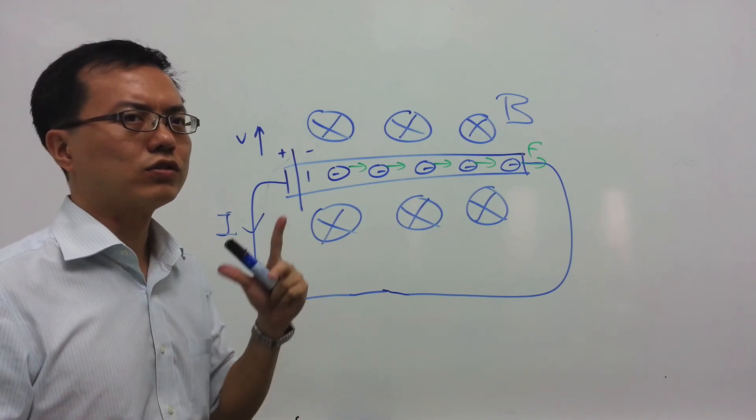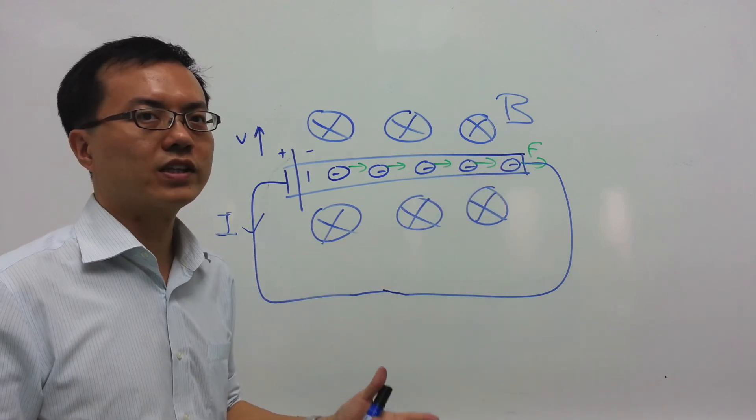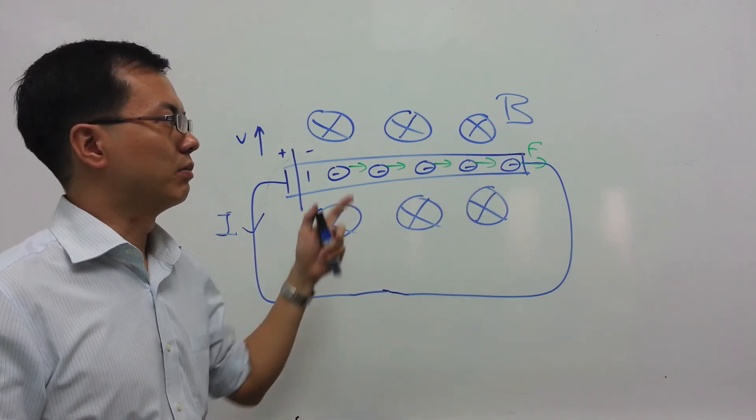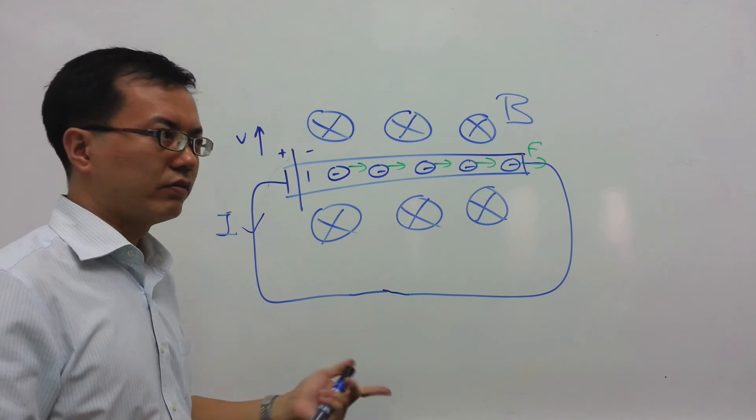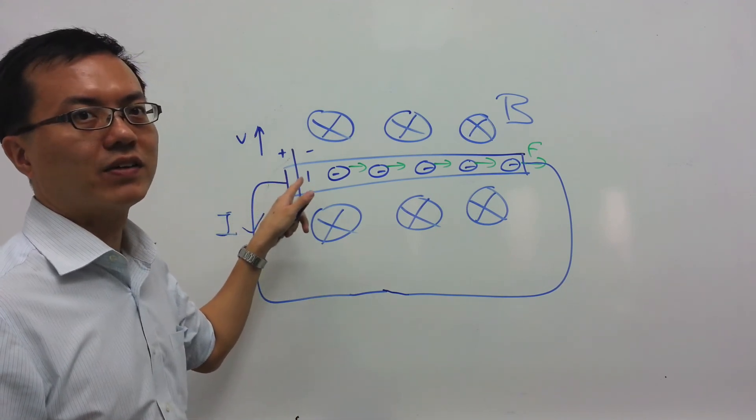And that is how you can use Fleming's left hand rule to explain how electrons experience a force when it's moved in a magnetic field, and relate that to Fleming's right hand rule which tells you the direction of the EMF induced.